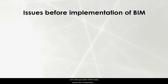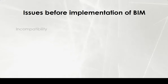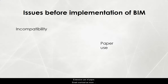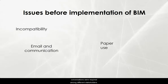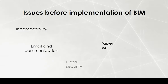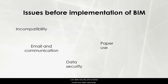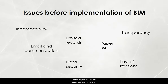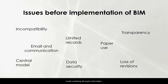Let's discuss some of the many issues the construction industry was facing before the implementation of BIM: incompatible IT systems, lots of problems around file sharing and different file formats, extensive use of paper, email overload as more conversations were required among different stakeholders, low data security and unclear modern data ownership, low transparency of information flow, loss of revision documents, limited project records, and finally there was no central model containing all project information.